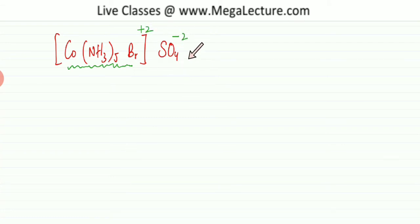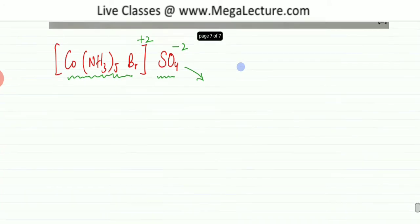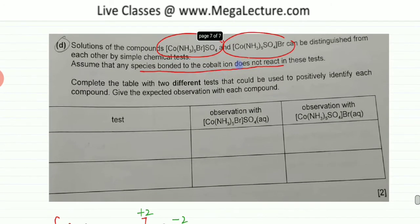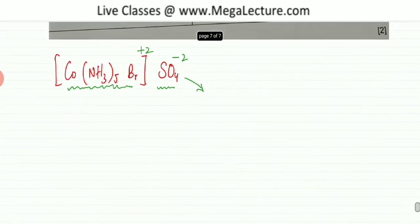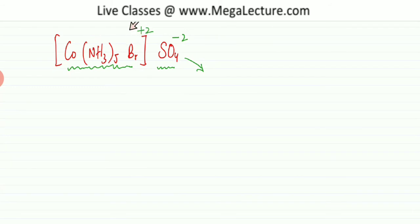The SO4 is not directly bonded to cobalt, so we keep it as separate. When in solution, it will dissociate. The question specifically states that anything bonded to cobalt does not react, so the species attached to cobalt are not going to react.